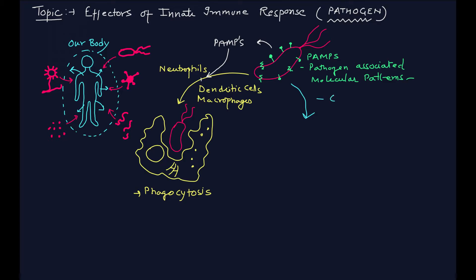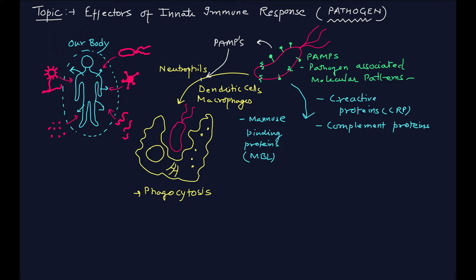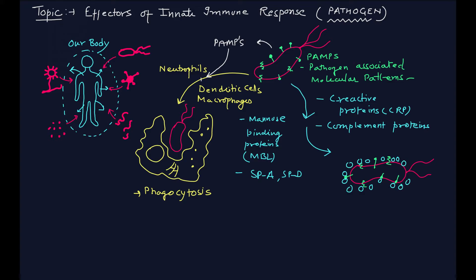The next important factors are proteins: C-reactive protein (CRP), complement proteins, mannose-binding protein, as well as SP-A and SP-D proteins. These proteins are present in our blood and they try to attach to the microorganism so that the organism can be identified by the phagocyte. When they attach to the pathogenic organism — in this case the bacterial cell — we call it an opsonized pathogen.